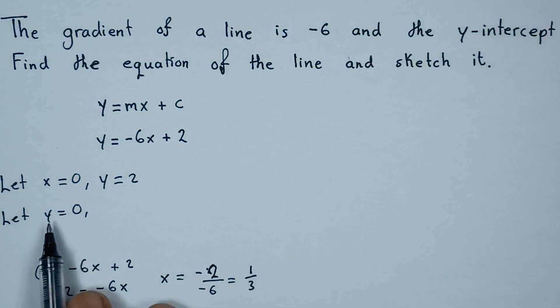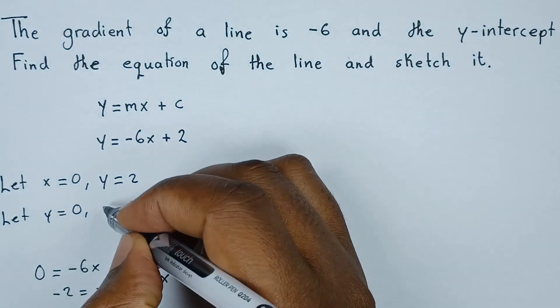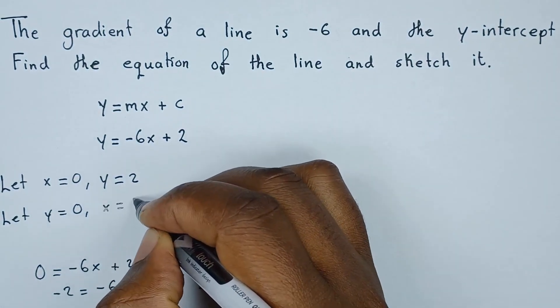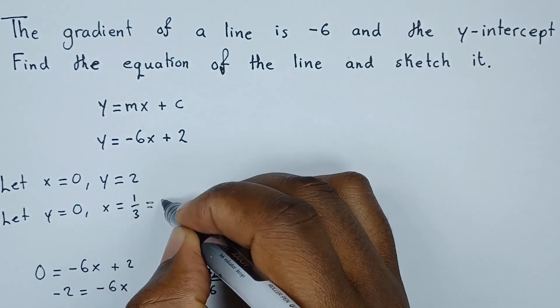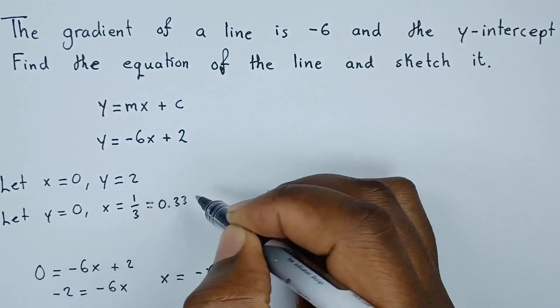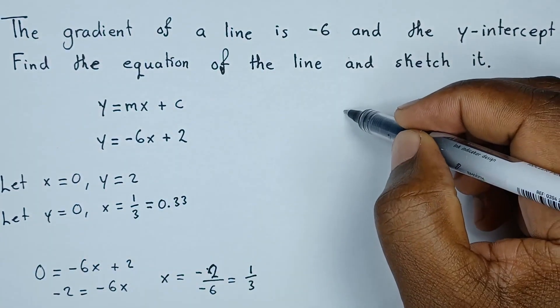So when y is 0, x is 1 over 3. Now 1 over 3 is just the same as 0.33. So let's see how we can roughly sketch this.